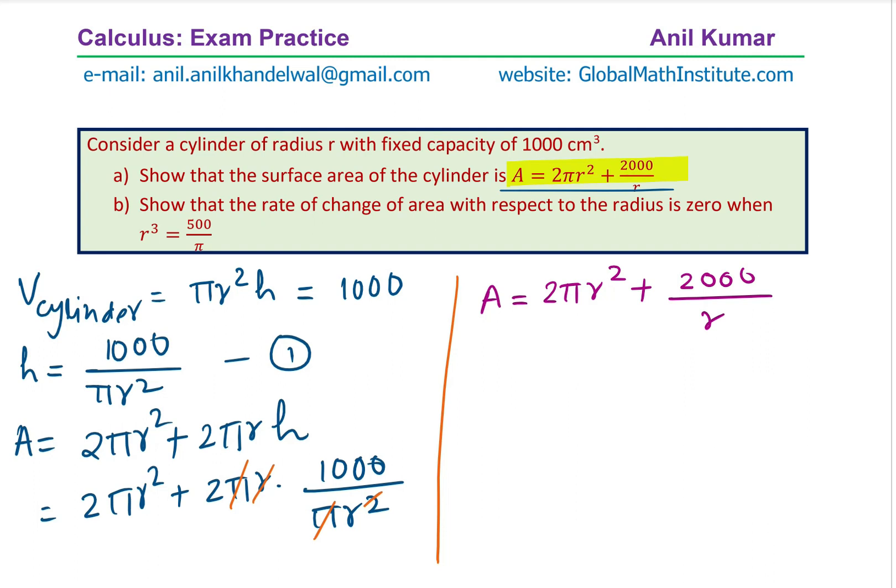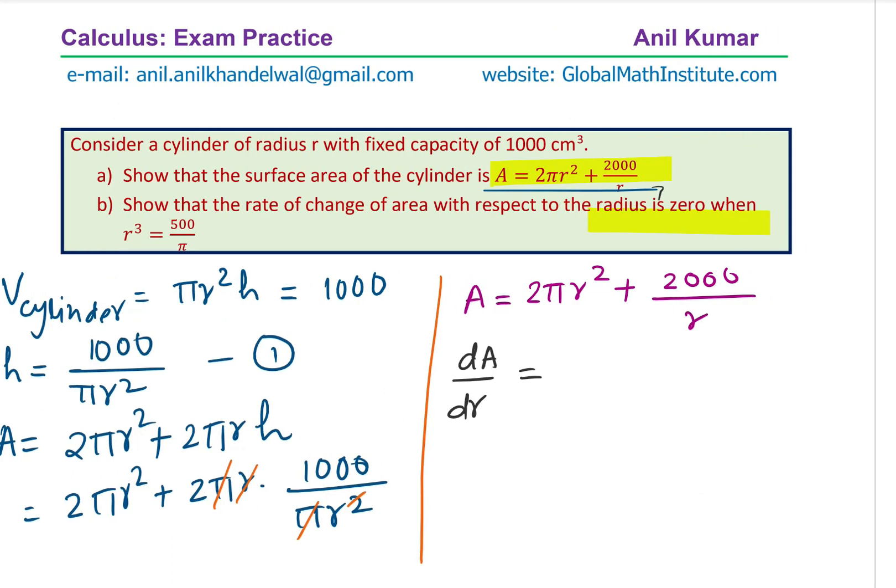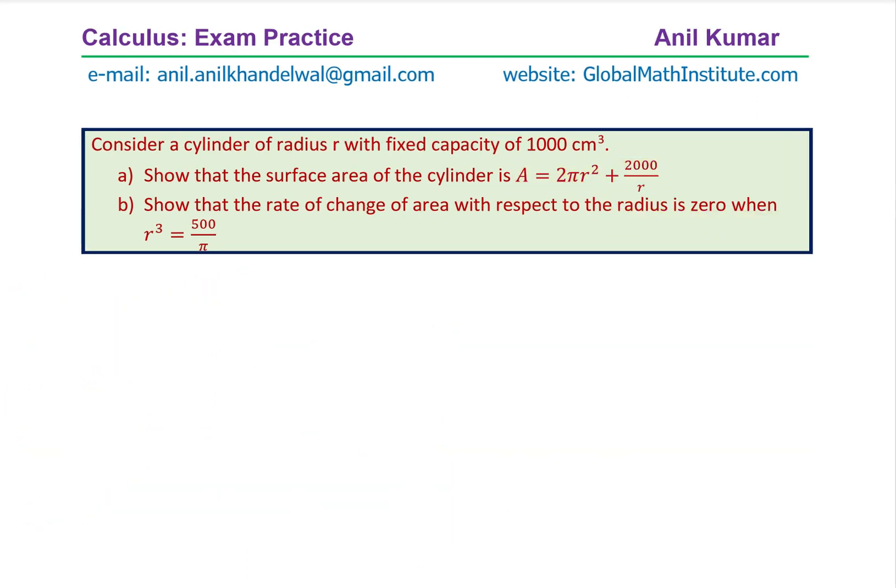So area is 2πR² + 2000/R. Now part B is show that the rate of change of this area with respect to radius is 0. So what we need to find now is rate of change of area with respect to the radius. And find the condition when this equals 0. And that condition should be R³ = 500/π. Let's take it on the next page.